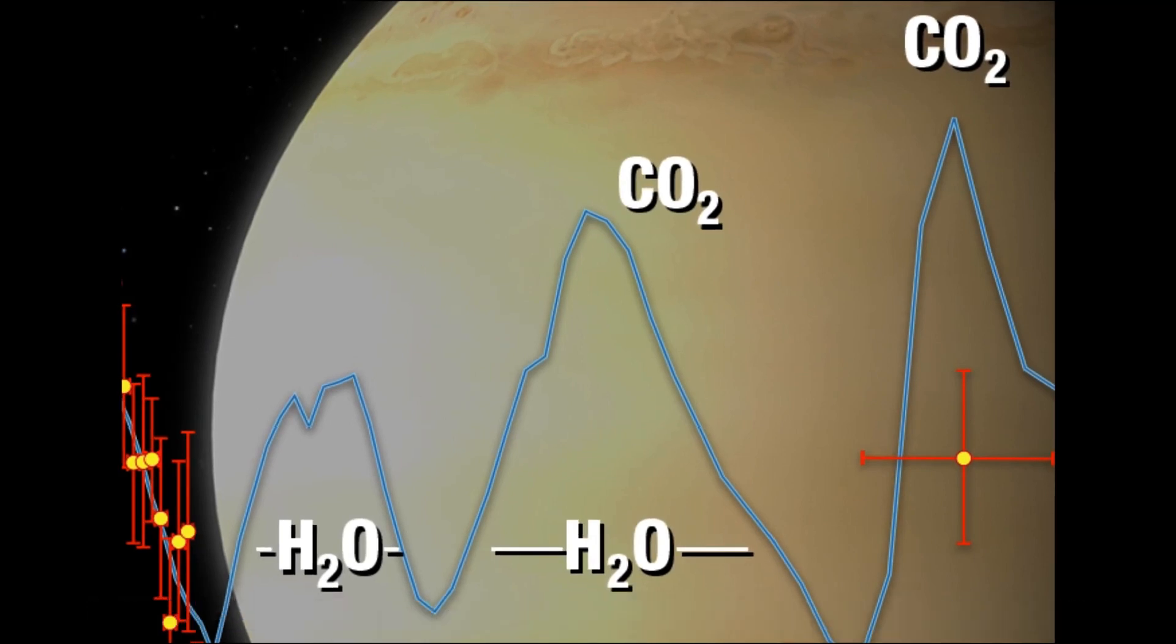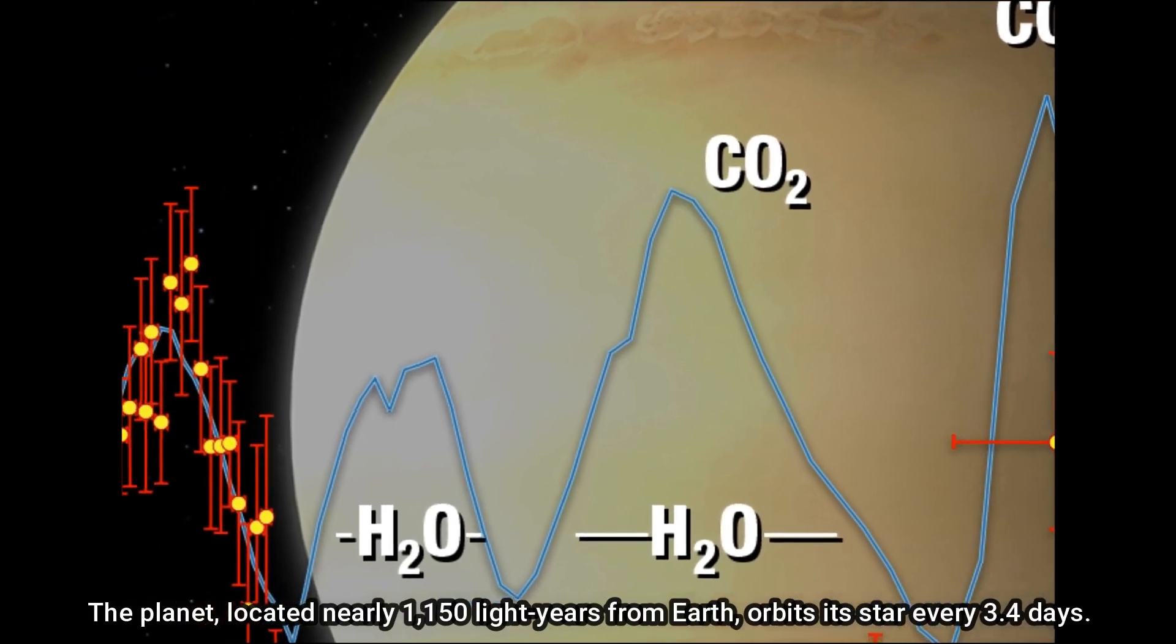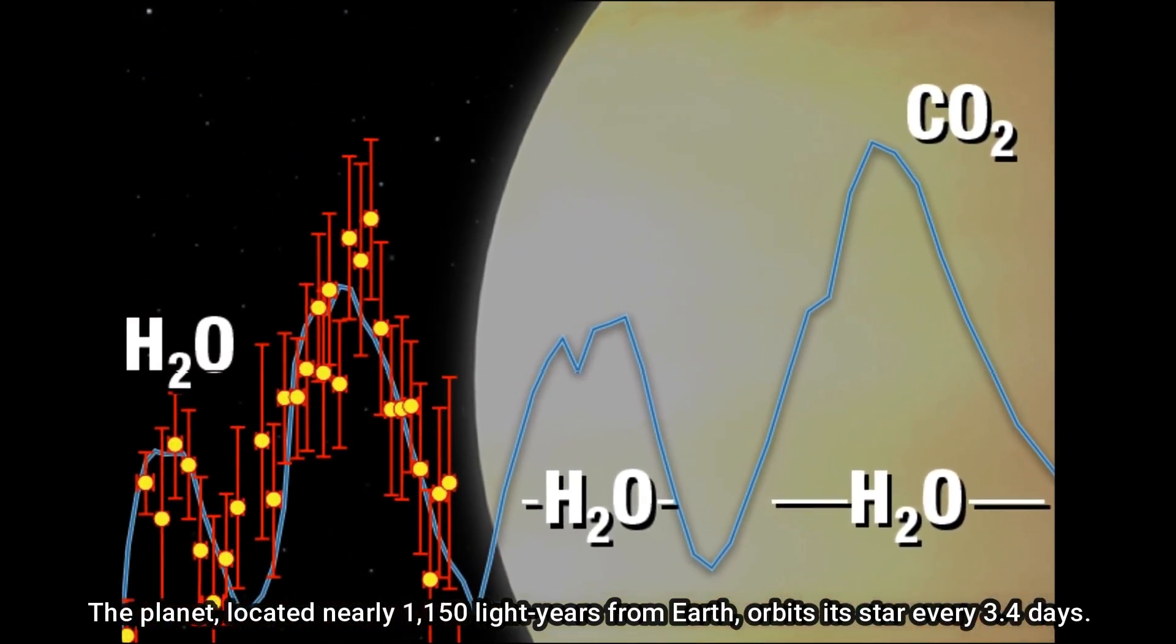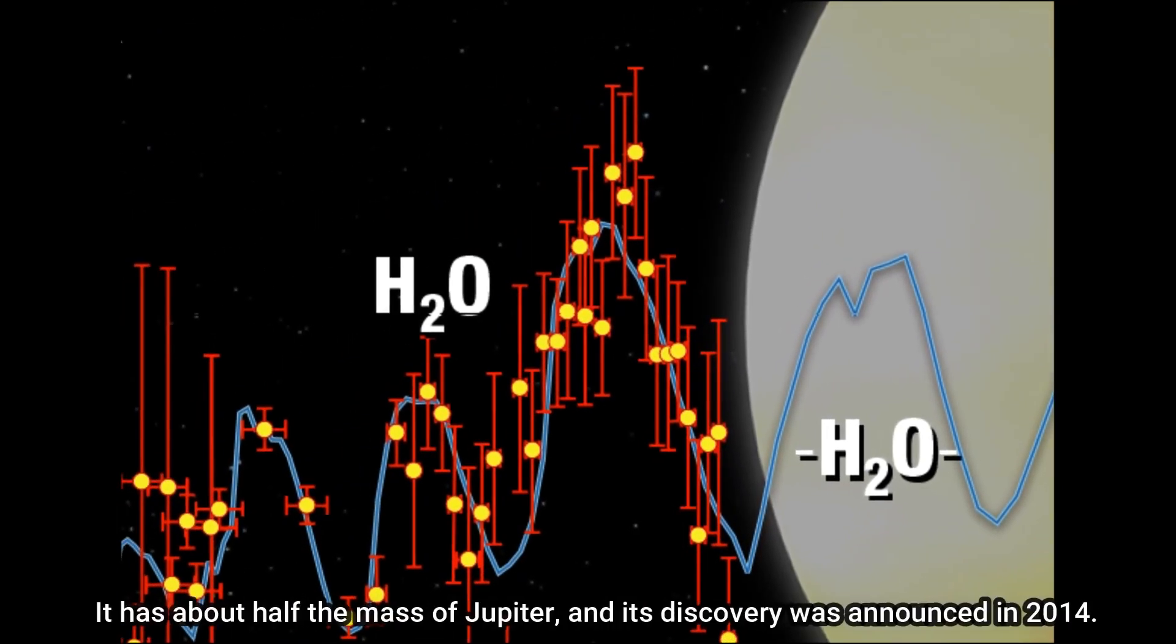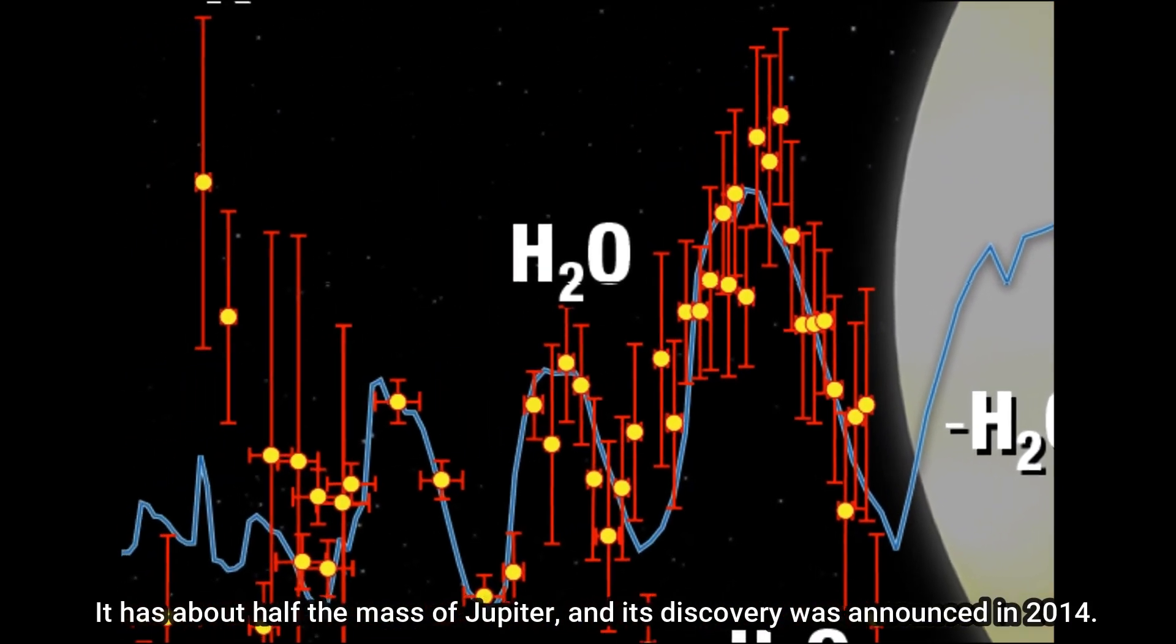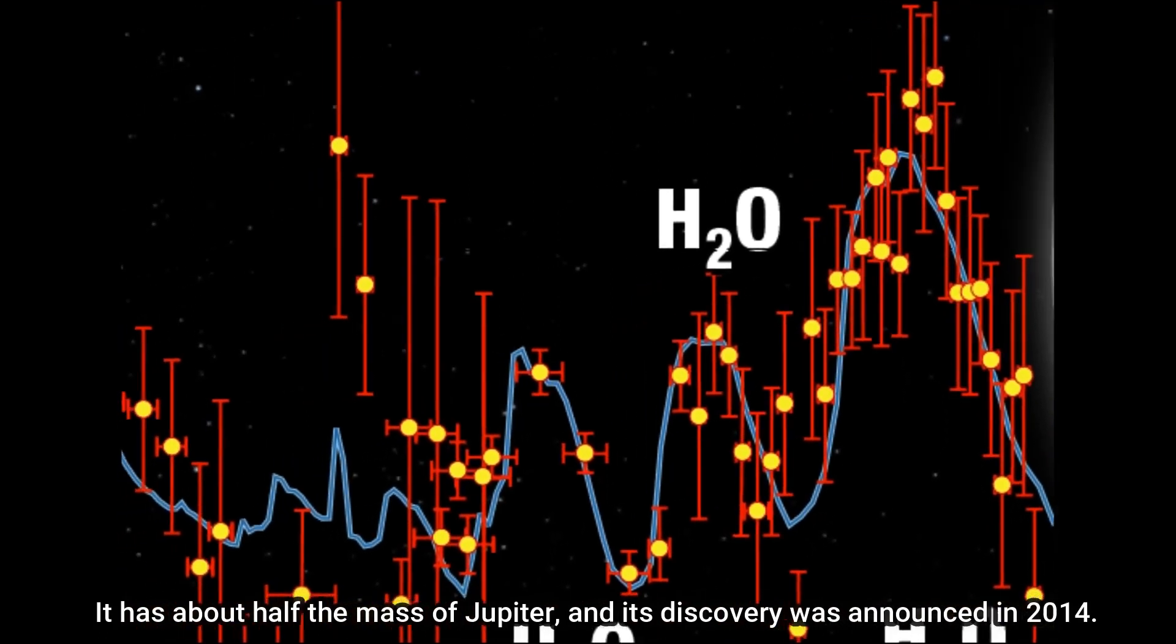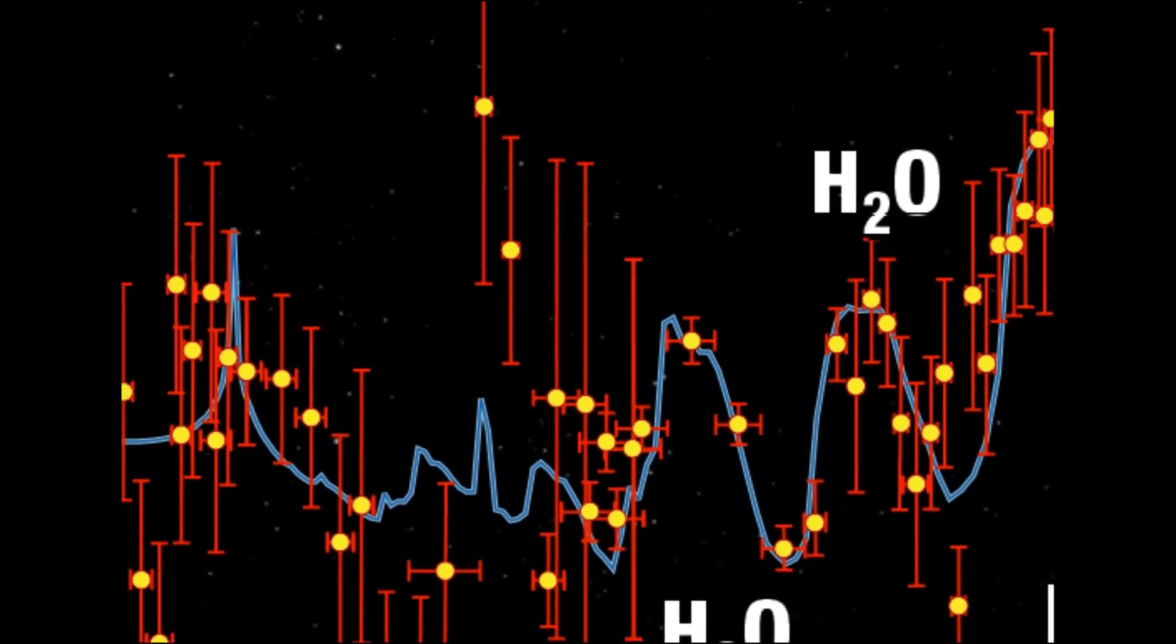This part of the spectrum is particularly sensitive to water as well as other key molecules like oxygen, methane, and carbon dioxide, which are not immediately obvious in the WASP-96b spectrum but which should be detectable in other exoplanets planned for observation by Webb.